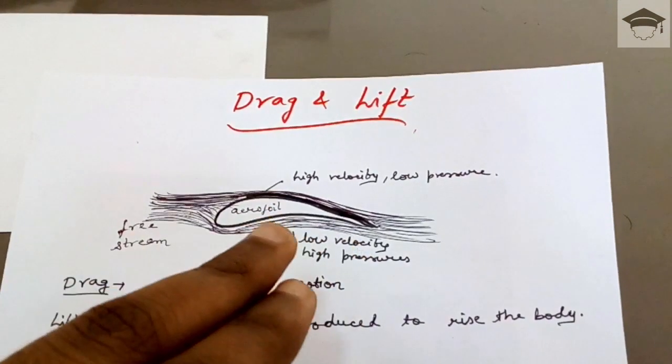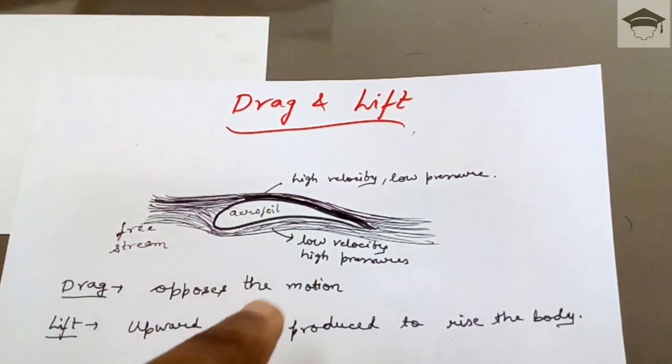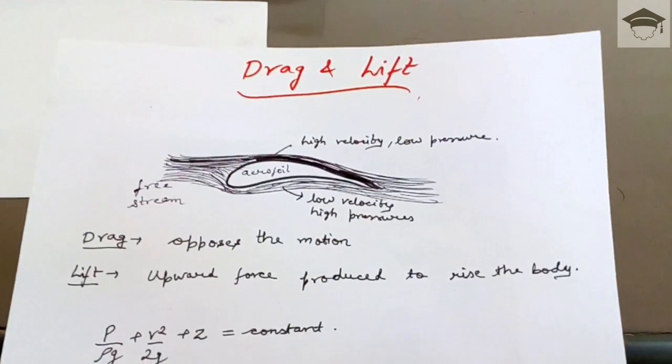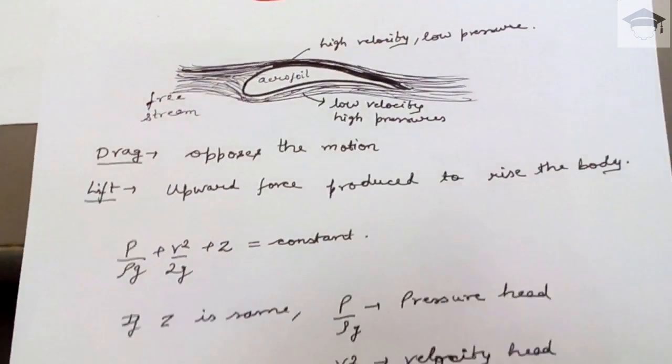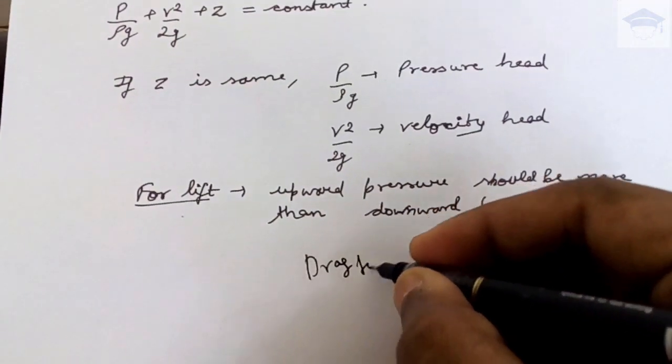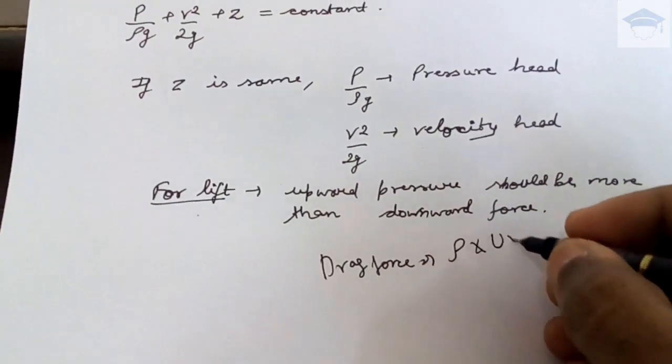Now drag force, the formula of drag force is ρ u into circulation. Drag force is ρ into u into circulation. Now ρ is the density of the flowing fluid, u is the free stream velocity.